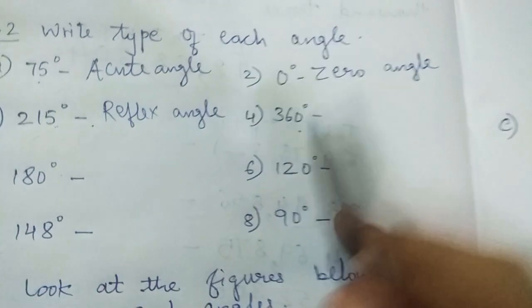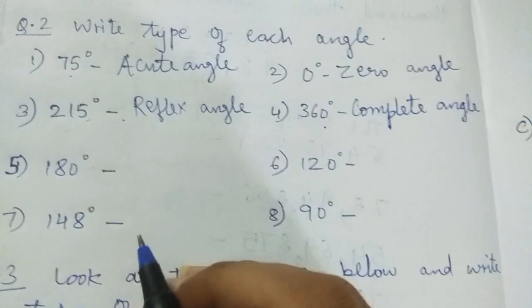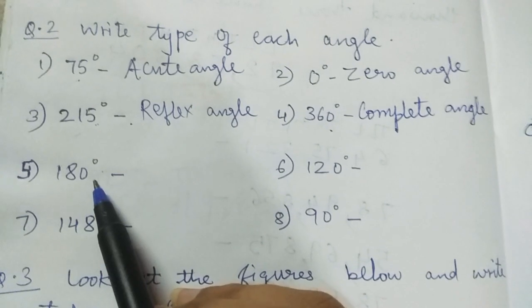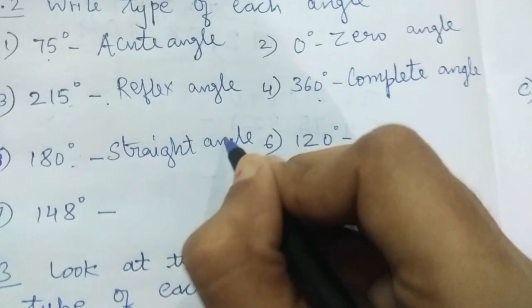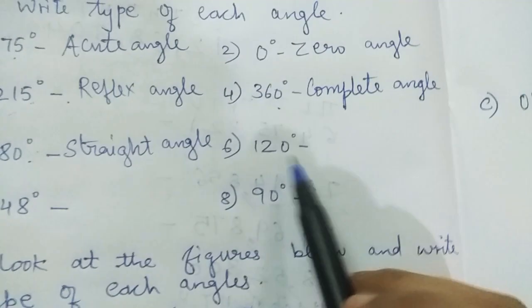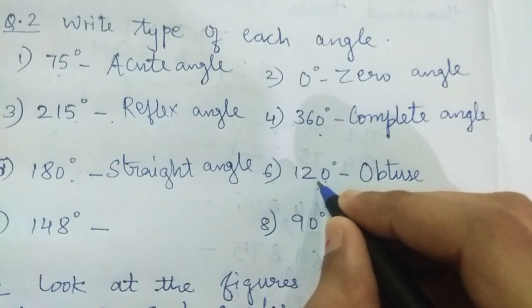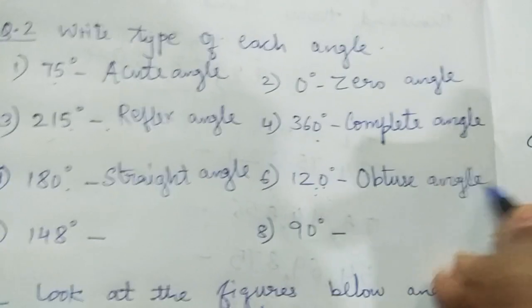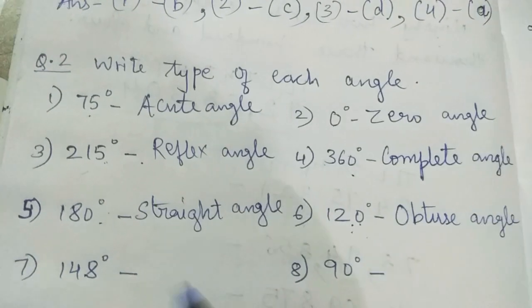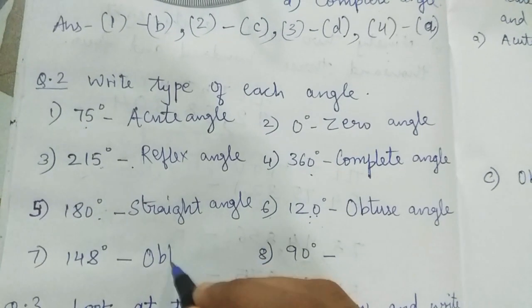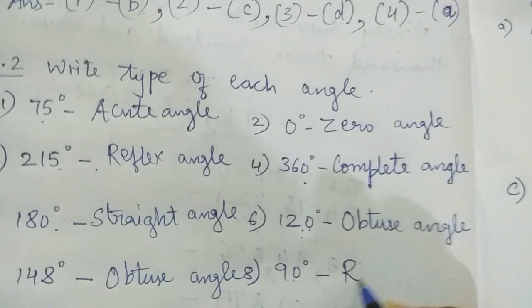Next, 180 degree is a straight angle. Next, 120 degree — 120 degree is an obtuse angle, greater than 90 and less than 180, so it is an obtuse angle. Next, 148 degree — again greater than 90 degree and less than 180 degree, so again it is an obtuse angle. Lastly, 90 degree — we all know 90 degree is a right angle.